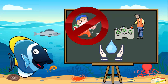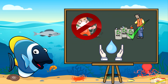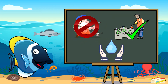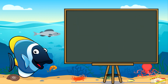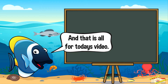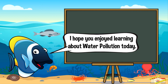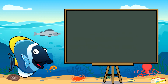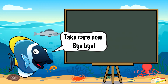Preventing water pollution involves reducing the use of harmful chemicals, properly disposing of waste, and implementing practices that protect water quality. And that is all for today's video. I hope you enjoyed learning about water pollution today. Take care now, bye bye!